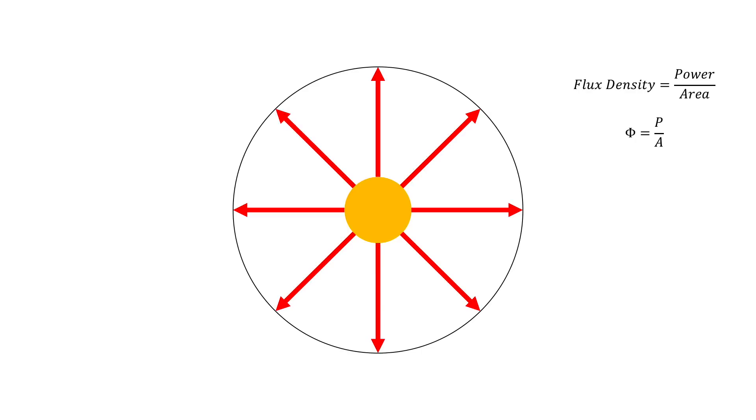Flux density is measured as the amount of power that hits a unit area. If we place a spherical shell around the sun at some distance, the solar flux density at that shell is given by the total power hitting the shell divided by the surface area. If we increase the radius, the surface area increases but the total power remains the same, so the solar flux density decreases. This gives us the expression: φ = P / (4πr²).